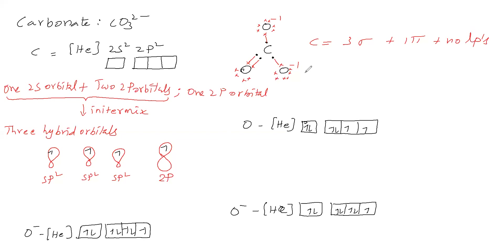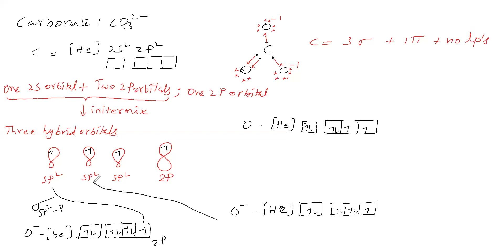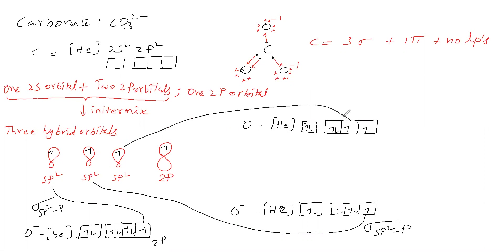Now for bonding: the sp² orbital of carbon and the p orbital of O⁻ undergo axial overlapping to give a sigma bond. Another sp² orbital of carbon and p orbital of another O⁻ undergo axial overlapping to give a sigma bond. The sp² orbital of carbon and p orbital of the neutral oxygen also undergo axial overlapping to give a sigma bond.